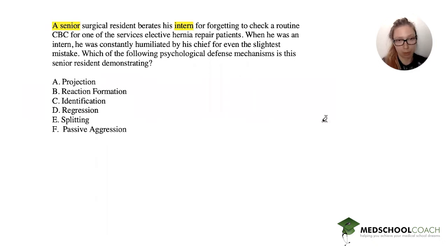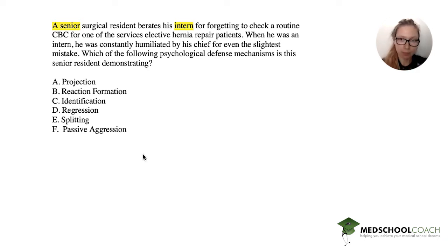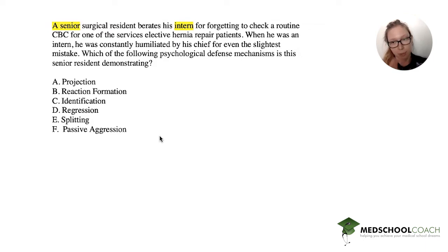Projection: What is projection? Projection is attributing one's undesired feelings or thoughts to another person. For example, a husband who is cheating on his wife suddenly accuses her of cheating on him. In this case, it would be the intern thinking the senior hates him when really he's the one who hates the senior. So it's probably not projection — we can cross that one out.